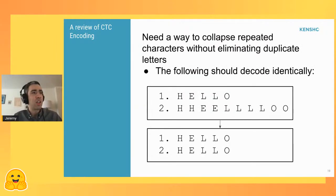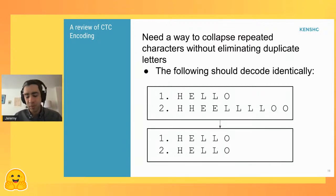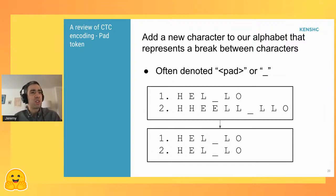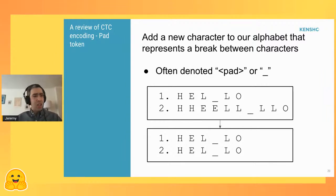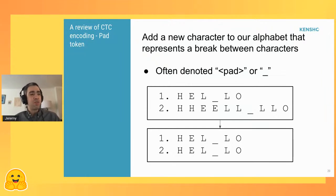You need a way to collapse repeated characters without eliminating actual duplicates. For example, if someone spoke 'hello' at normal speed it appears with five characters; if they speak much slower, each character might get duplicated. Both should decode to the same word. The way this is done in CTC encoding is by adding a new character to the alphabet representing a break between characters — often denoted as a pad or underscore. You insert this character between duplicate letters, then use a two-step process: first eliminate duplicate characters, then remove the blank character to get the word.